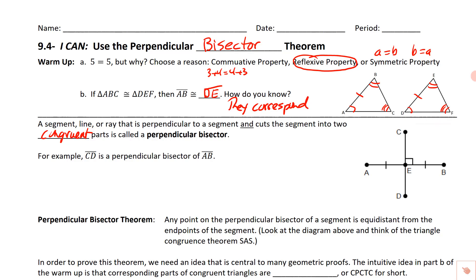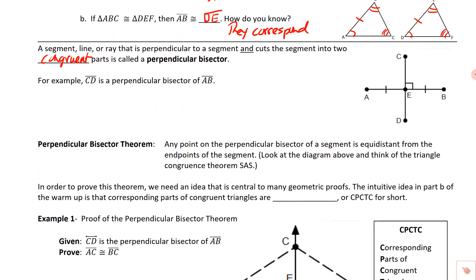We've got the perpendicular bisector theorem, which is the focus of this lesson. It says that any point on the perpendicular bisector of a segment is equidistant from the endpoints of the segment. We want to look at the diagram and convince ourselves this is true. We can pick any point on the perpendicular bisector — say point C — and this distance from C to one endpoint is exactly the same as the distance from C to the other endpoint.